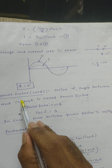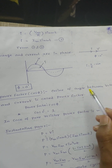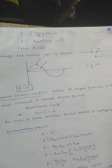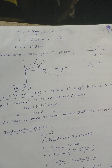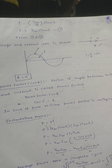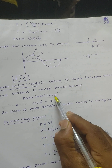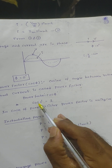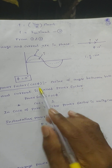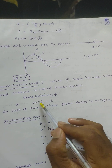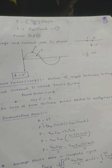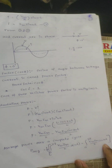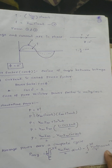Power factor is nothing but the cosine of the angle between voltage and current. Here power factor is indicated by cos(phi). Since phi equals 0, cos(0) equals 1 — that means in case of a pure resistor, the power factor is unity power factor.